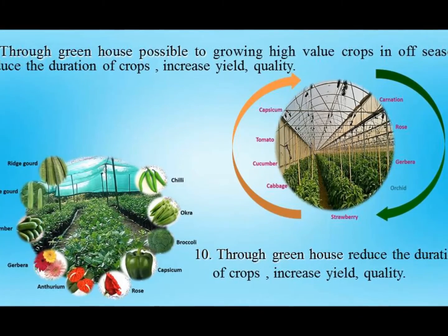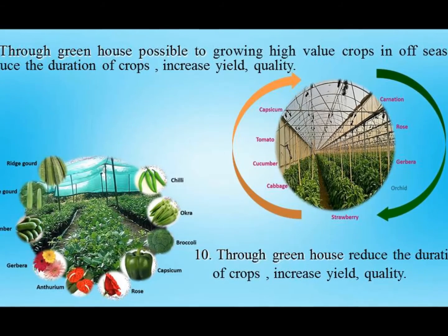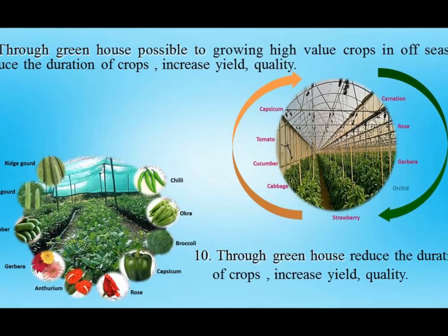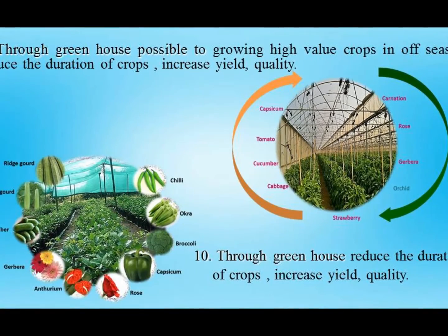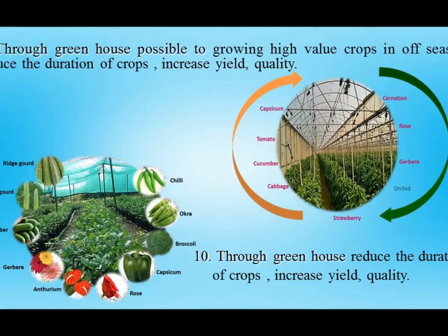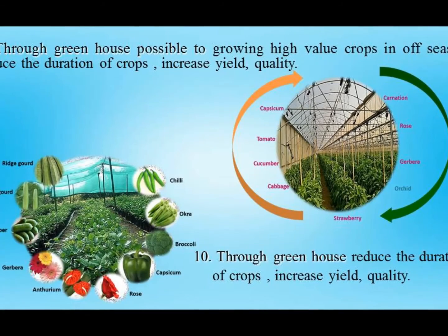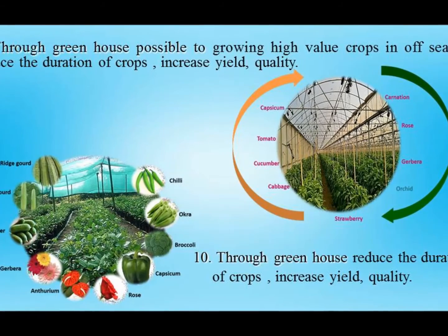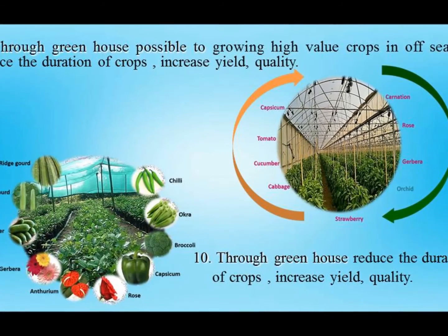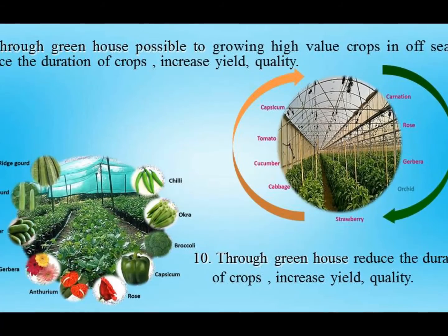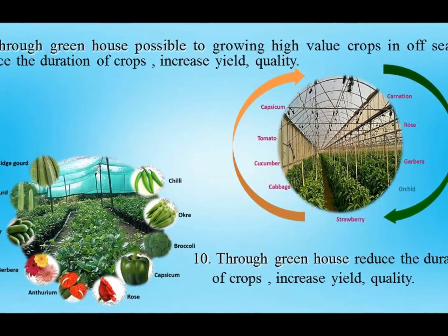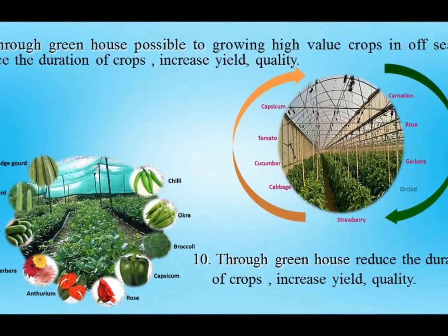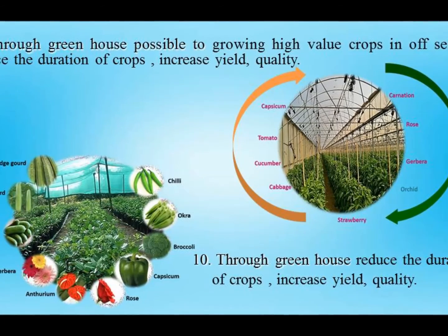The next advantage is that greenhouse helps to reduce the duration of crops and increase the quality of crops. For growing high value crops, for example, vegetables like capsicum, tomato, cucumber, and flowers like carnation, gerbera, orchids, and rose — greenhouses are an easy way to go for this cultivation.